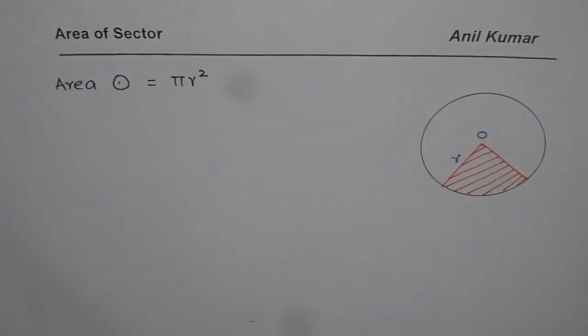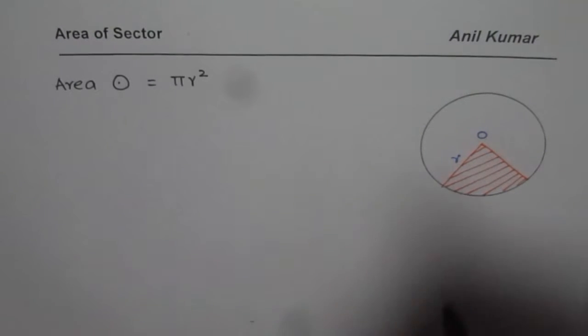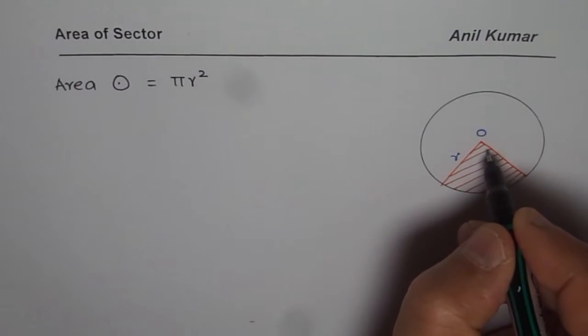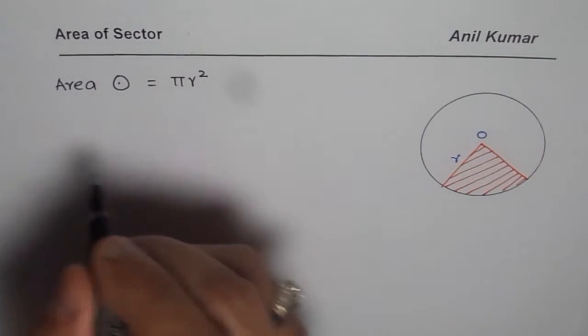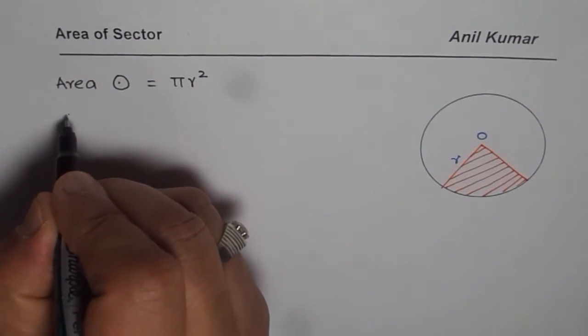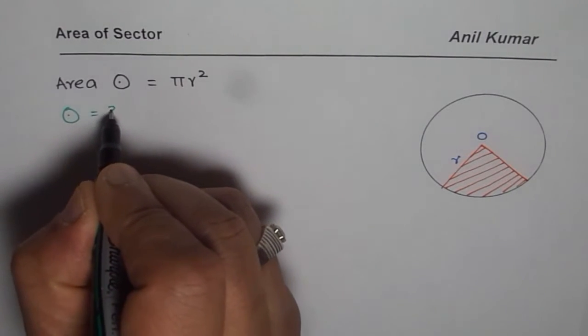First we will do measurements in degrees. In degrees, a full circle is 360 degrees.